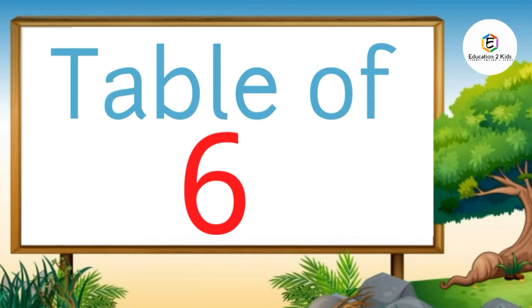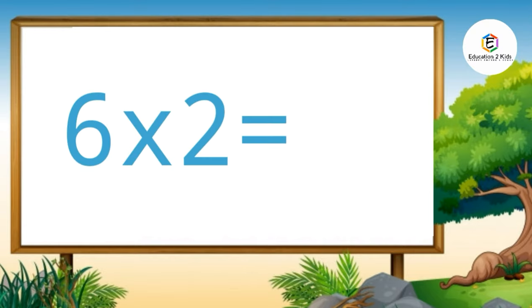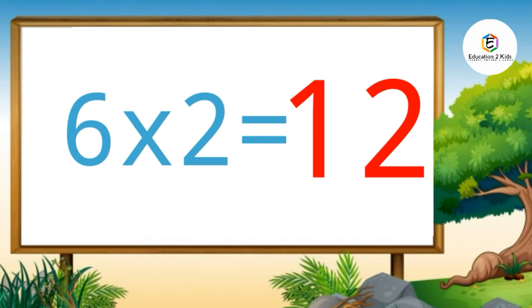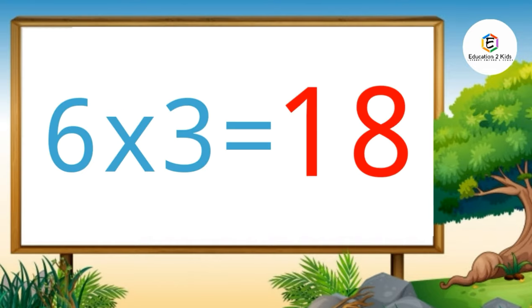Table of six. Six ones are six. Six twos are twelve. Six threes are eighteen.